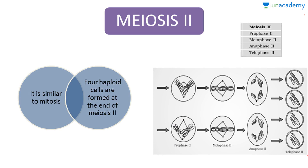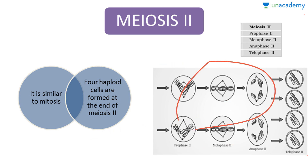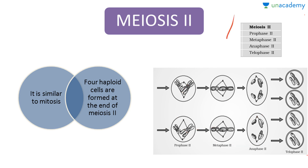Meiosis II is pretty much similar to mitosis. Four haploid cells are formed at the end of meiosis II. As you can see in detail here, meiosis II is also divided into four parts: prophase II, metaphase II, anaphase II, and telophase II.